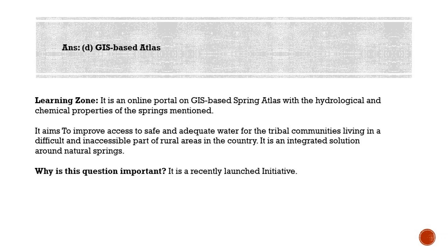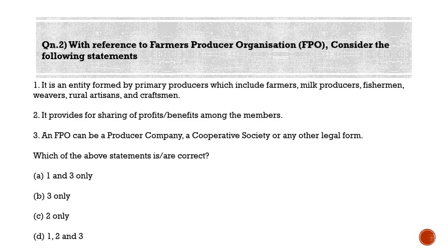We will now move to the second question. With reference to Farmer Producer Organizations (FPOs), consider the following statements. Statement 1: it is an entity formed by primary producers including farmers, milk producers, fishermen, weavers, rural artisans, and craftsmen. Statement 2: it provides for sharing of profits or benefits among the members. Statement 3: an FPO can be a producer company, a cooperative society, or any other legal form. Which of the above statements is/are correct? Options: A — one and three only, B — three only, C — two only, D — one, two, and three.